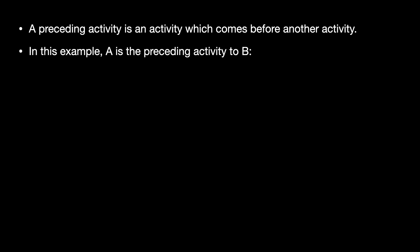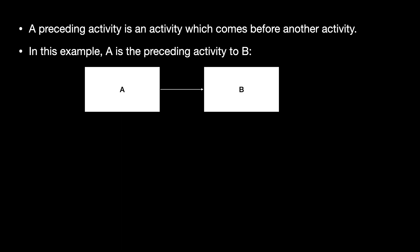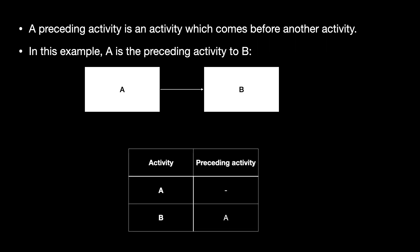Before we go ahead, certain basic concepts. A preceding activity is an activity which comes before another activity. In this example, A is the preceding activity to B. You can also show this with the help of a table. In the first column you have the activities A and B, and to the right you have the preceding activities, with A having no preceding activity, and the preceding activity of B being activity A.